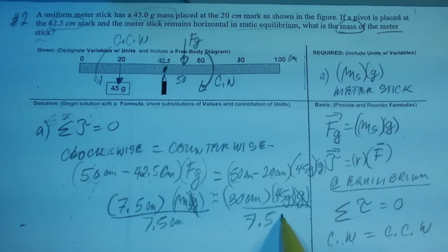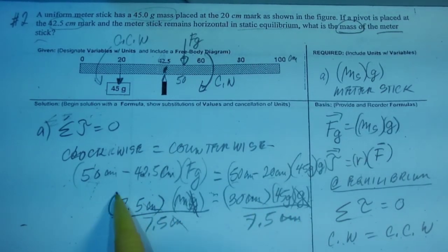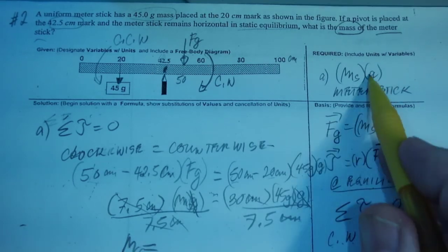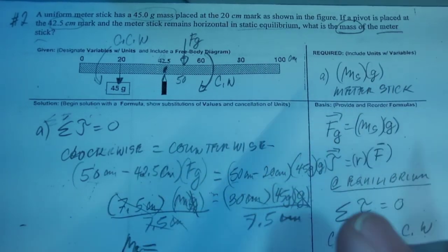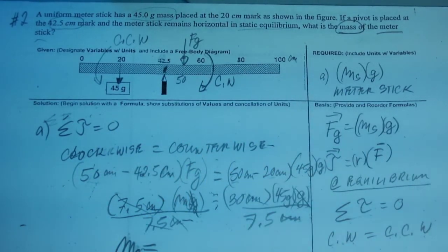And again, you know, it's always good to do this stepwise so you don't get lost. Cancel, cancel, cancel, cancel. So M, which is going to be M here, that's what we're looking for, M_S, mass of the meter stick, is equal to, what is that, 30 times 45 divided by 7.5.